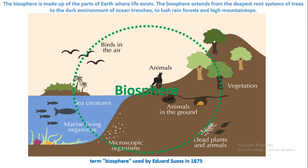The biosphere is made up of the parts of earth where life exists. The biosphere extends from the deepest root systems of trees, the dark environment of ocean trenches, to lush rainforests and high mountain tops. The term biosphere was first used by Edward Suess in 1875.